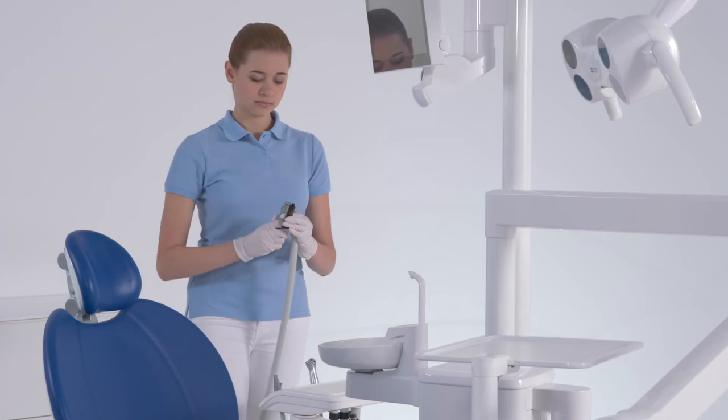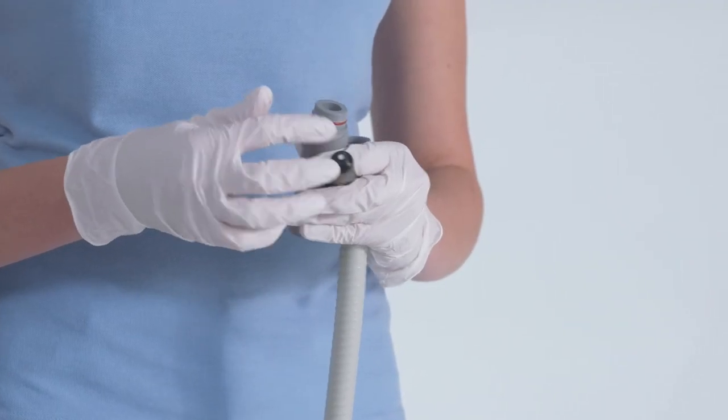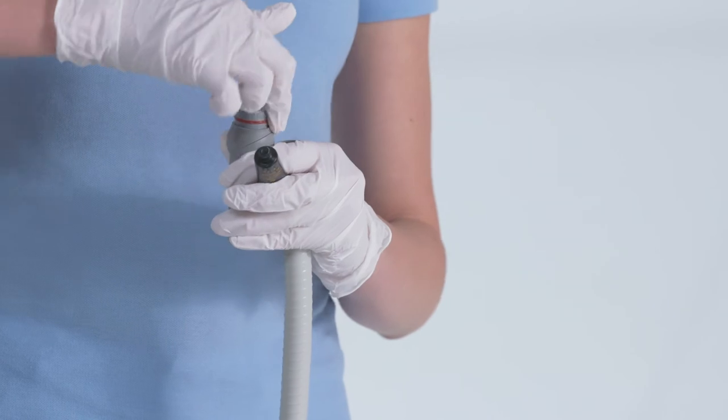Grease the O-rings on the suction handpieces. Pull the suction handpiece off the suction hoses and take apart at the joints.